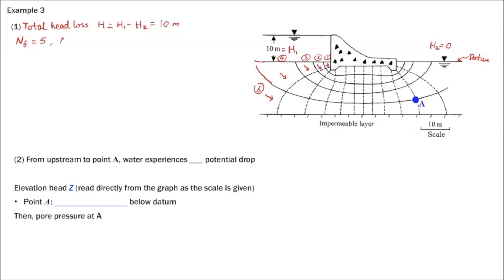And then we can also get N sub D, which is the number of potential drops. The potential drops, each time you cross an equal potential line, that's one potential drop. So we have 1, 2, 3, 4, 5, 6, 7, 8, 9, 10, 11, and 12. So there are a total of 12 potential drops from upstream to downstream. ND equals 12.